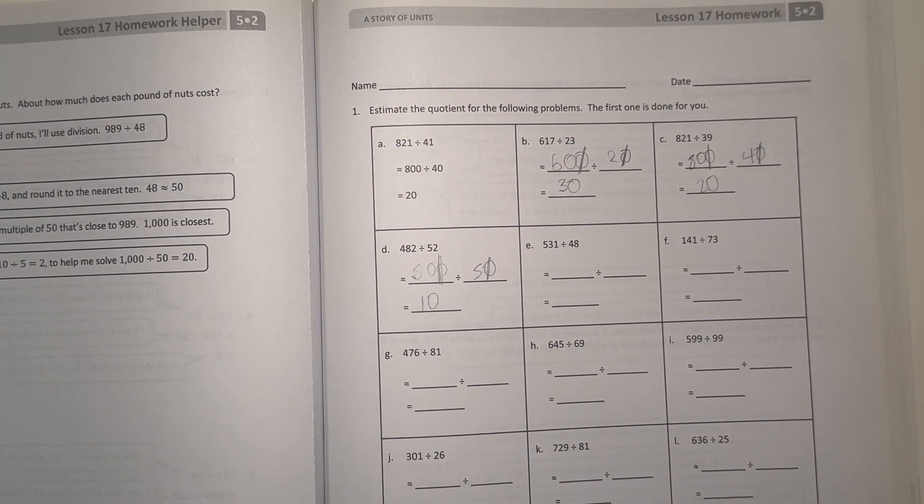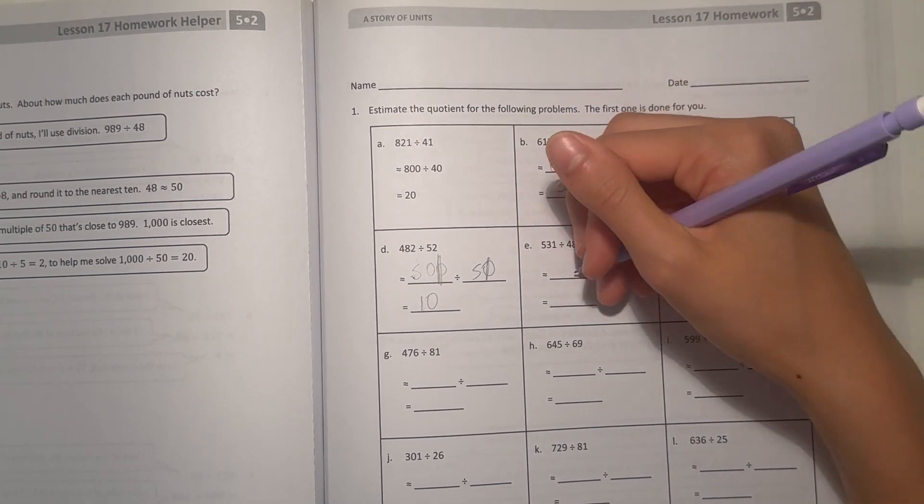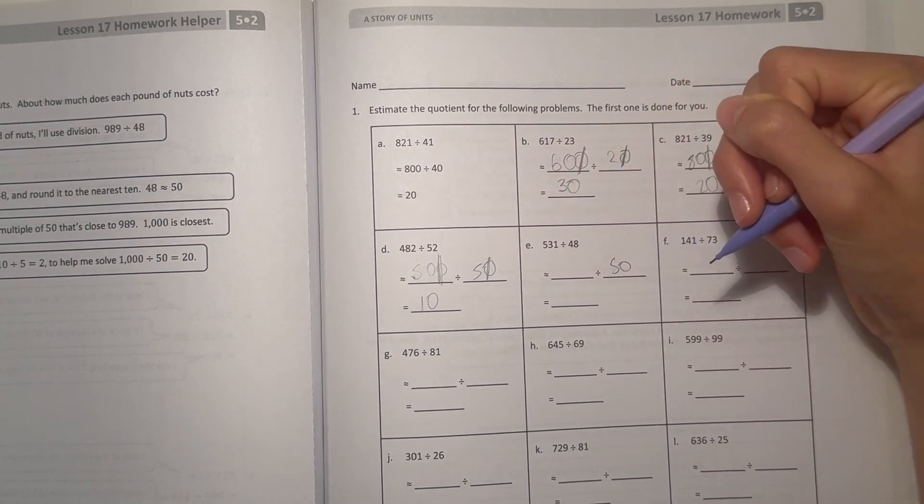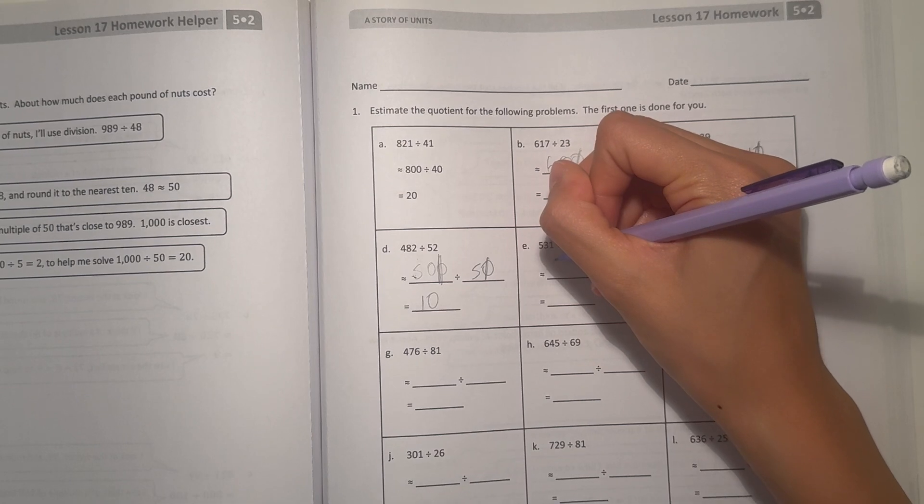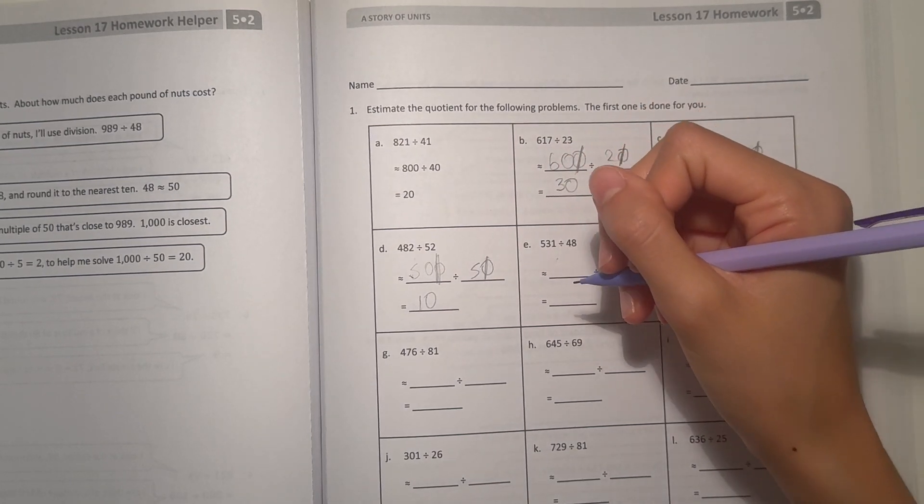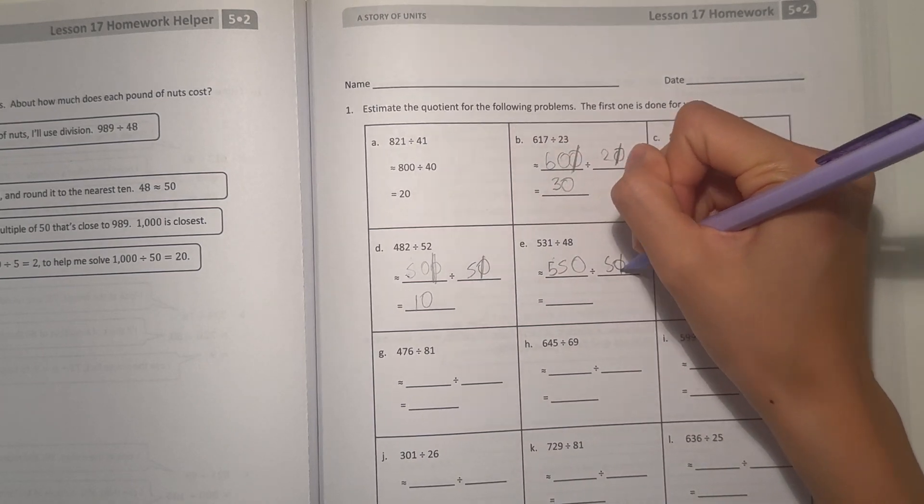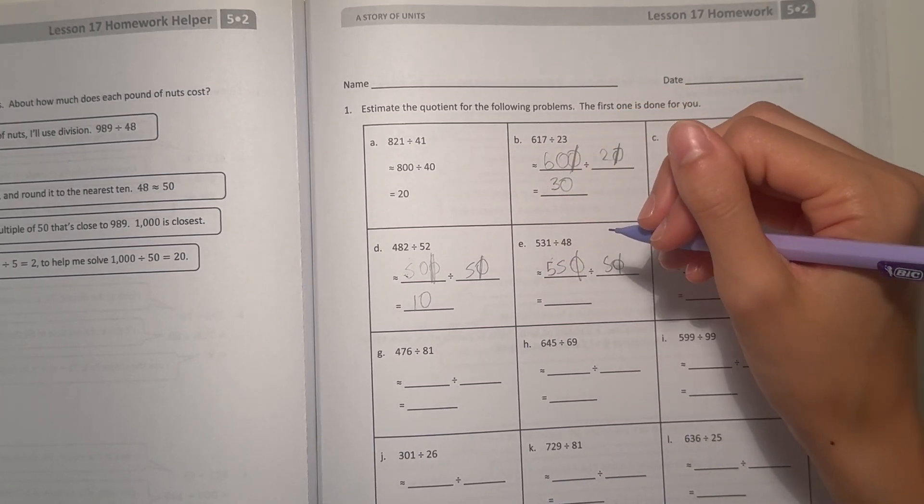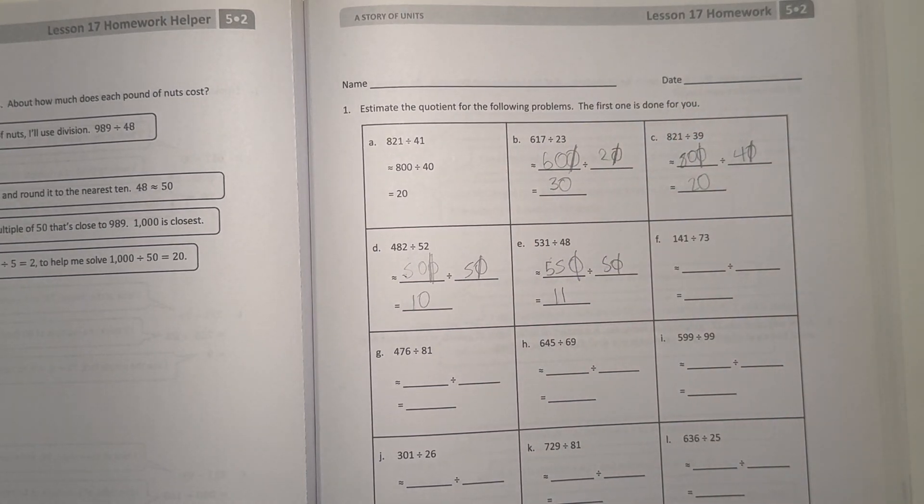All right, and E, 831 divided by 48. First round 48, rounds to 50. And 531 can go to, let's see, we can go to 550, and cross off the zeros. So 55 divided by 5 would be 11. So that would be our estimate.